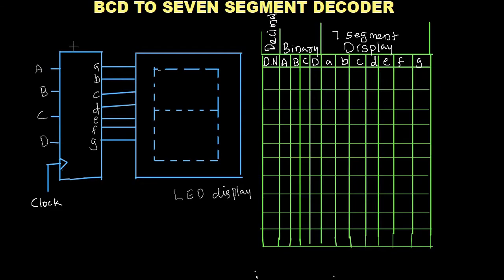7-segment decoders are used in our calculators, data banks, and digital watches. There are 7 segments — 1, 2, 3, 4, 5, 6, and 7 — and these are arranged in a format of 8, so the display looks like the digit 8.